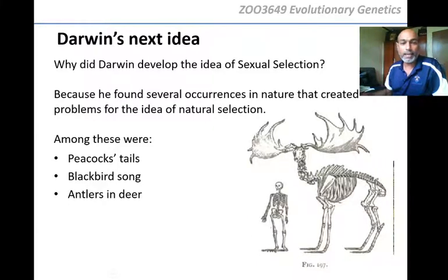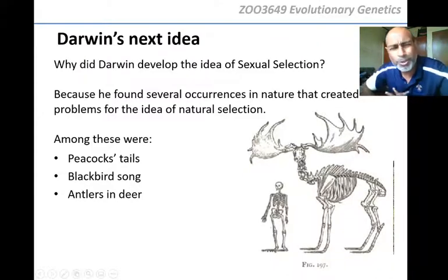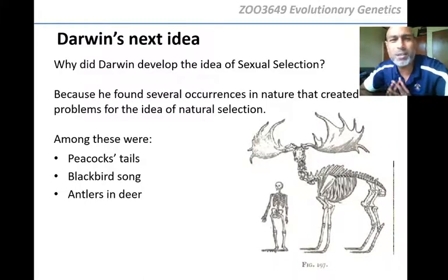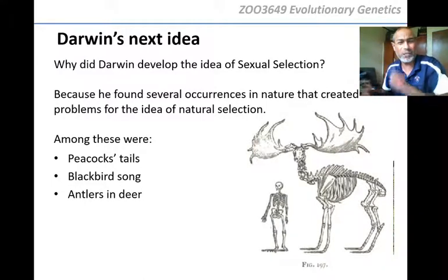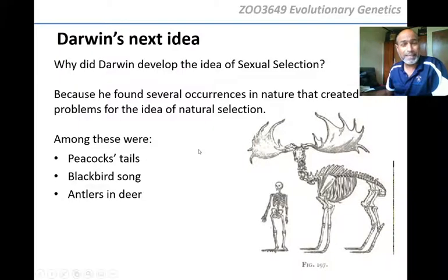Look at the antlers of this Irish elk — now an extinct animal found in Ireland. This is the size of an average human being. Look at how big those horns are. Are those horns really necessary? What if a predator is chasing it — are those horns going to keep it from escaping?